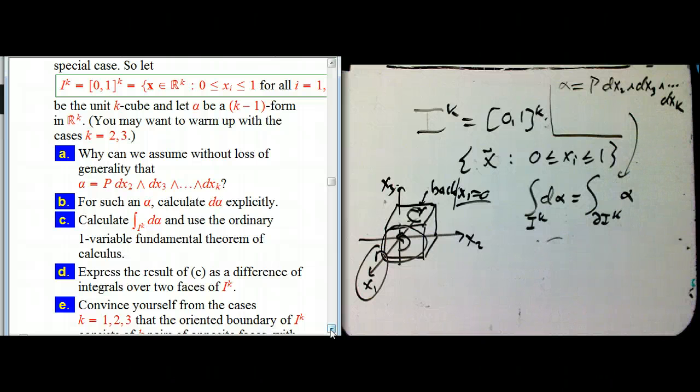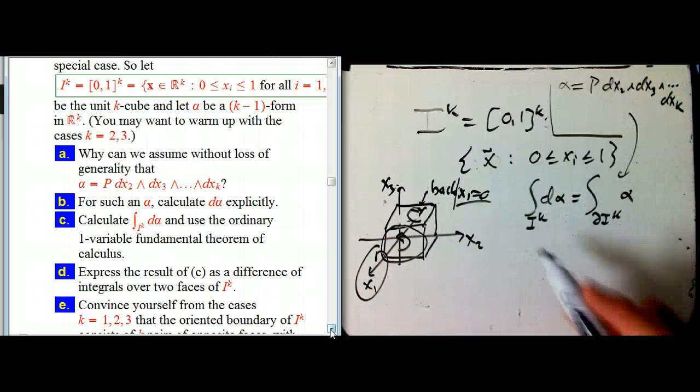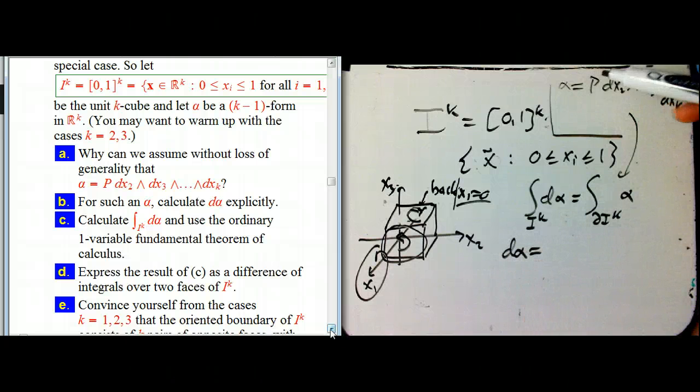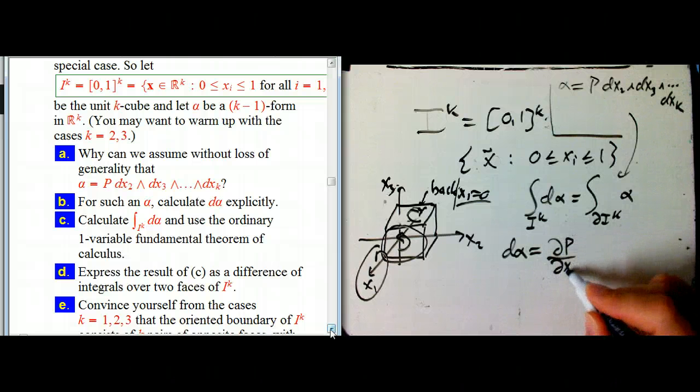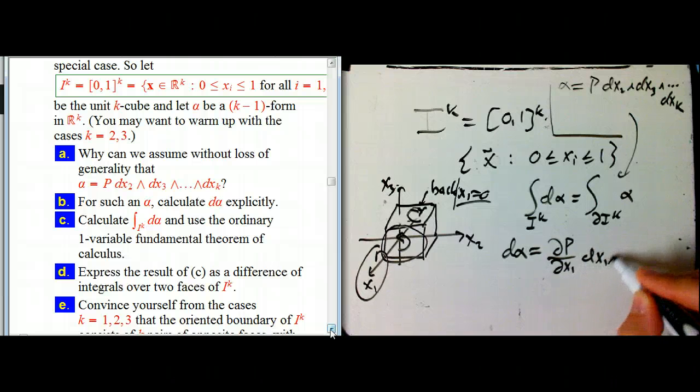So the next step, part b, you might want to calculate that d alpha explicitly, it's not hard. d alpha, you're going to take all the different derivatives of p and match them up, but they're all mostly going to die. Because if I took derivative with respect to x_2, I'd put in an extra dx_2, etc.